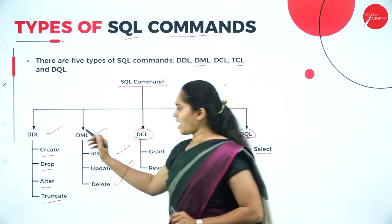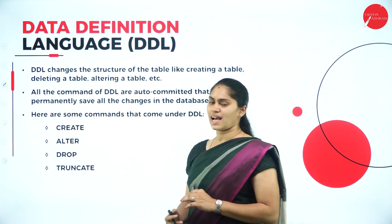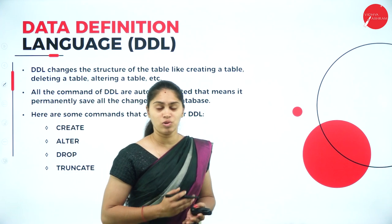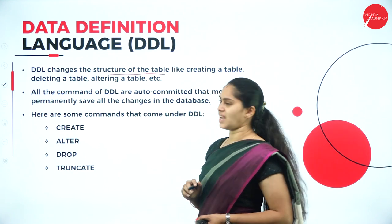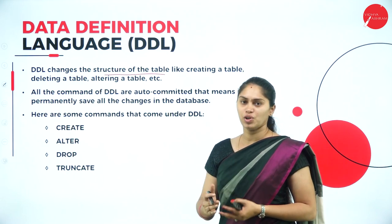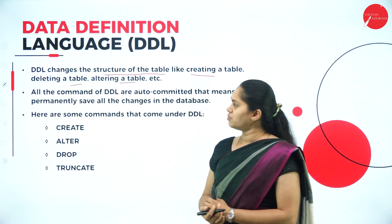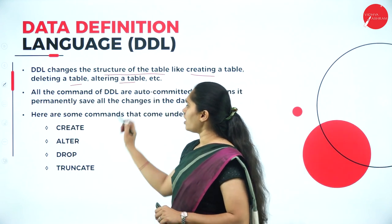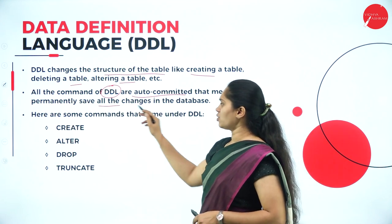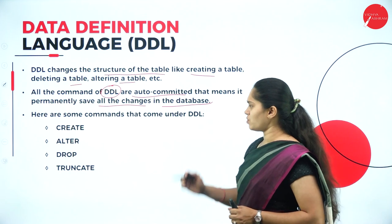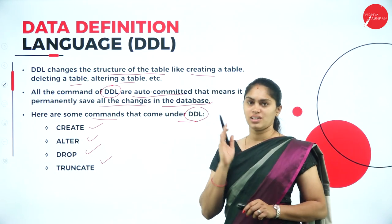In today's session, we are going to concentrate on DDL — Data Definition Language. This language is used to define data: the definition of a table, a view or a database. It changes the structure of a table or database. We can create, alter, delete and truncate using DDL. All DDL commands are auto-committed — by default they are permanently committed and save all changes in the database. The commands under DDL are CREATE, ALTER, DROP and TRUNCATE.